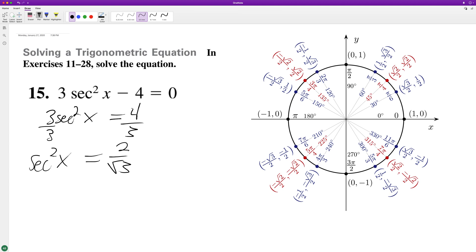This is the same thing as secant X all that squared, so take the square root of both sides. Oh wait, I already did take the square root. Anyway, secant is the same thing as 1 over cosine X.